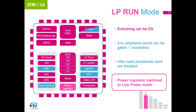Low power run mode is just like run mode in the respect that everything can be enabled or disabled. The difference is the regulator is in low power mode, reducing the maximum speed the device can run at and limiting the output current of the device.